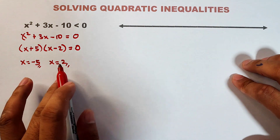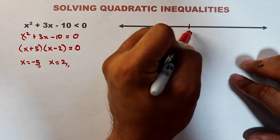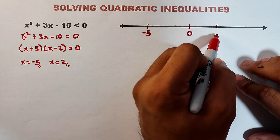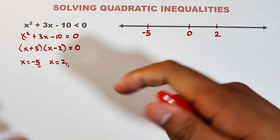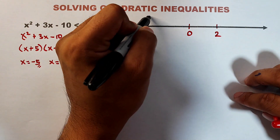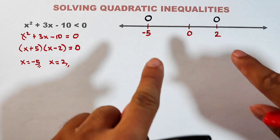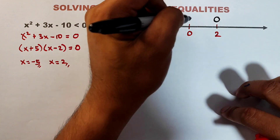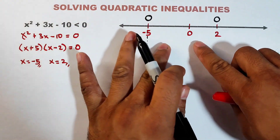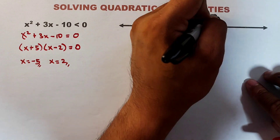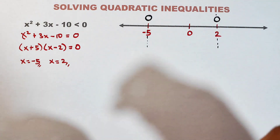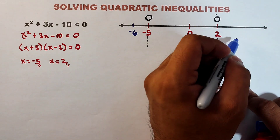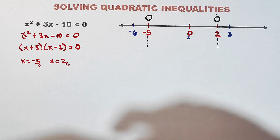Let's place these on the number line with zero in the middle, -5 on the left side of zero, and +2 on the right side of zero. Since the symbol is strictly less than, we use open circles to indicate the critical values are not included. Now we choose representatives for each region: -6 for the left region, 0 for the middle region, and 3 for the right region.